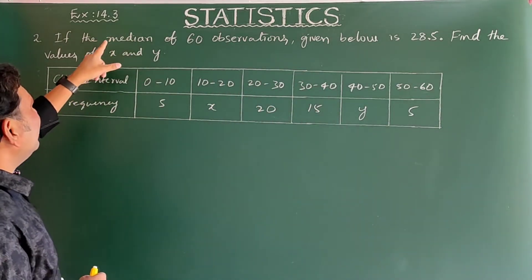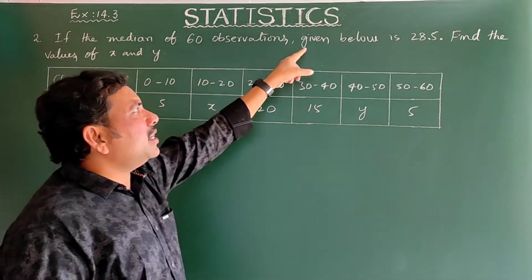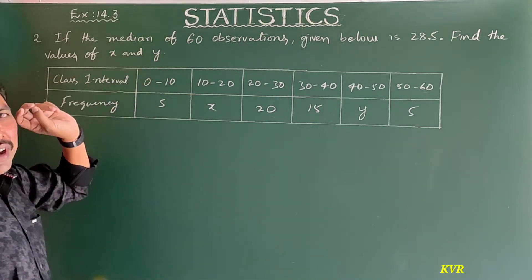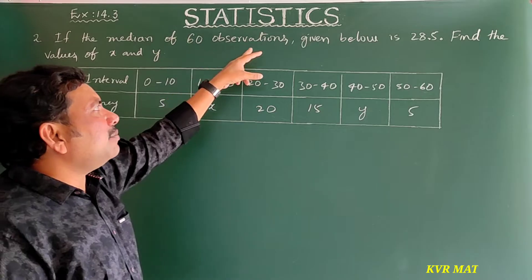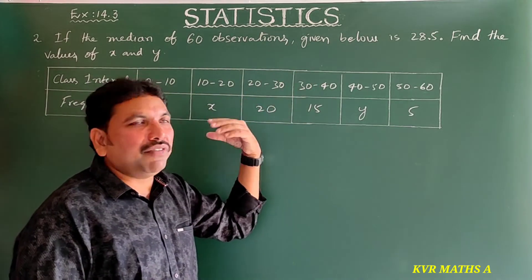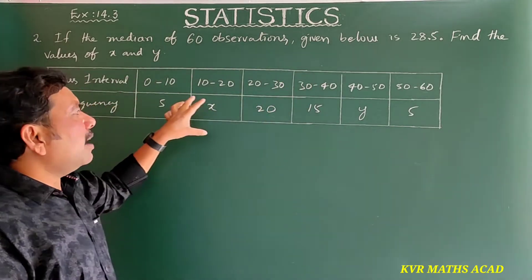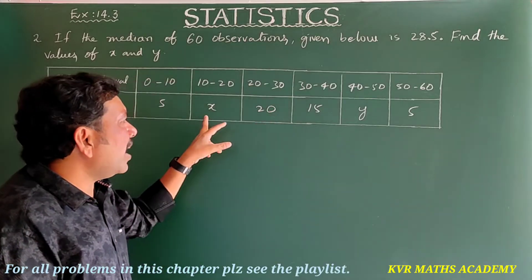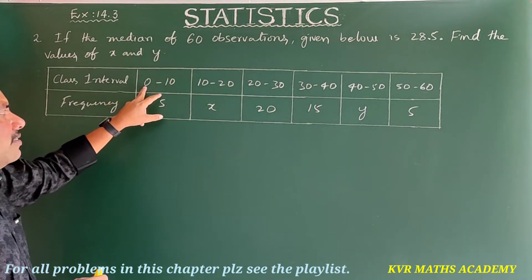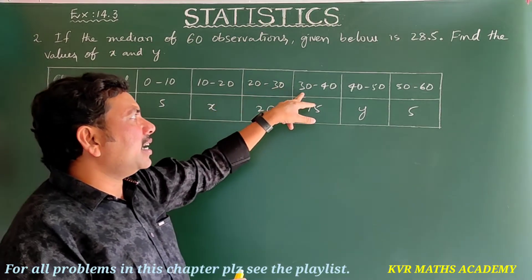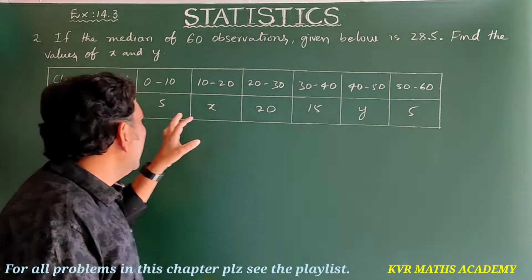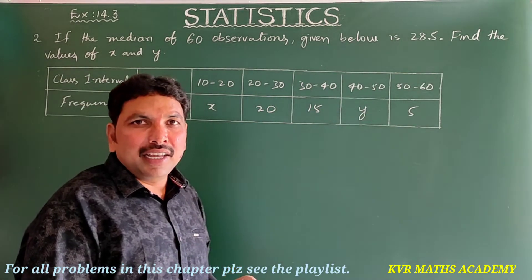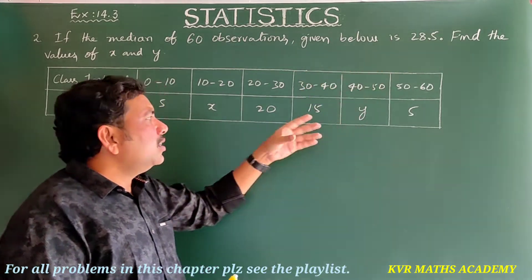This is the second problem in Exercise 14.3: If the median of 60 observations given below is 28.5, find the values of x and y. The class intervals are 0–10, 10–20, 20–30, 30–40, 40–50, and 50–60, with frequencies 5, x, 20, 15, y, and 5 respectively.